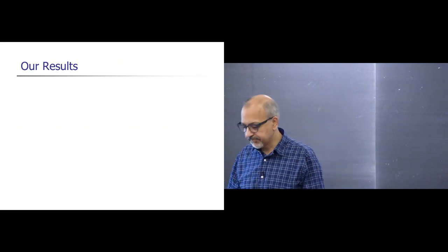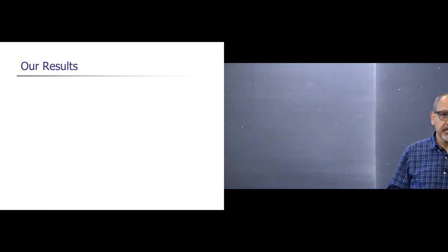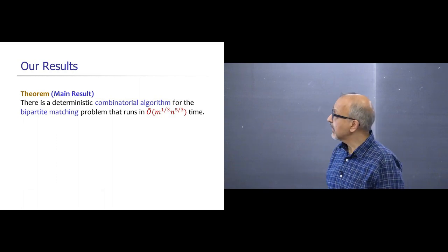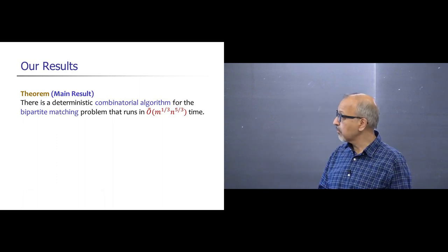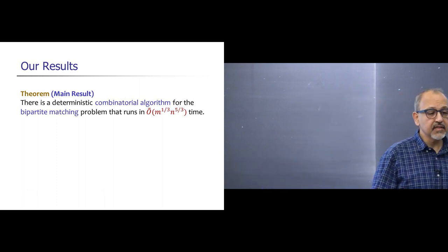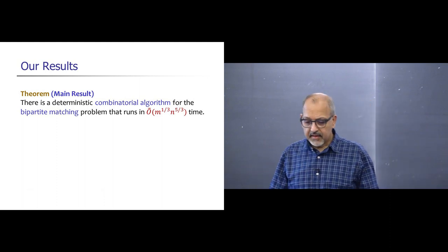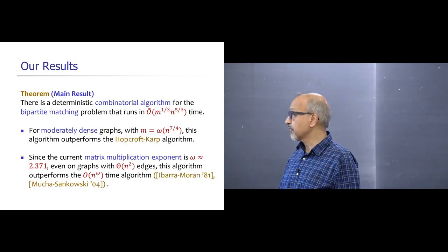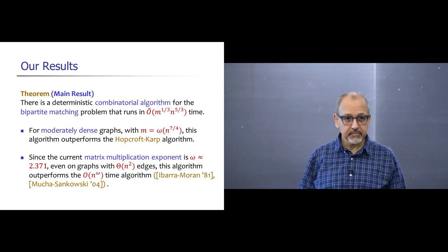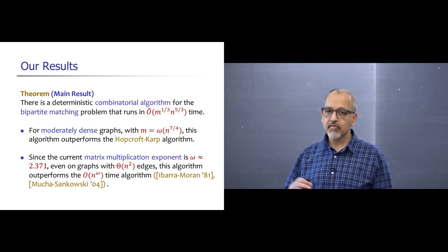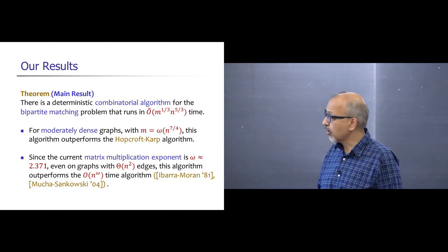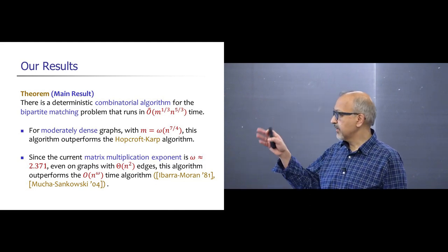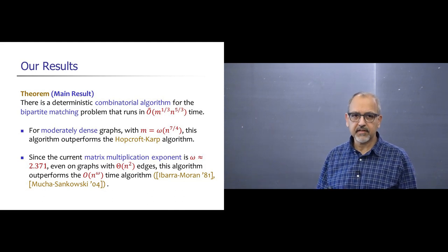Our main result is that it is indeed possible to get faster combinatorial algorithms for bipartite matching. We design a deterministic combinatorial algorithm that runs in time O(m^(1/3) · n^(5/3)). If the graph has more than n^(7/4) edges, this algorithm outperforms Hopcroft-Karp. Its worst-case runtime is O(n^(7/3)), which is better than O(n^2.37) from matrix multiplication, so it outperforms the matrix multiplication approach at all edge densities.